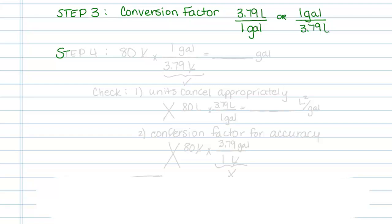So the next step is to set up the problem. You always write out first what you're given, and then you multiply it by a conversion factor that will cancel out your given and give what you want. So in this case, I'm going to put liters on the bottom and gallon on the top.